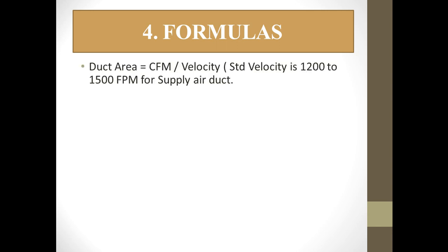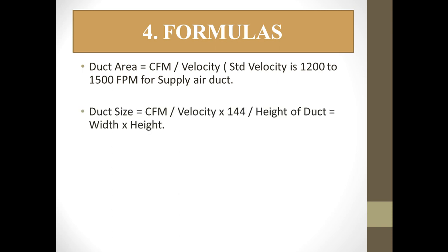Now let us come to the formulas — the 4th section. These formulas are required for ducting and air distribution products. To calculate duct area: Duct Area = CFM / Velocity, where the standard velocity is 1200 to 1500 FPM for supply air duct. To calculate duct size: Duct Size = CFM / (Velocity × 144), where 144 converts to square inches. Divide the result by the duct height to get the width, giving you width × height dimensions.